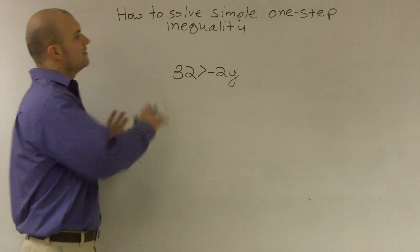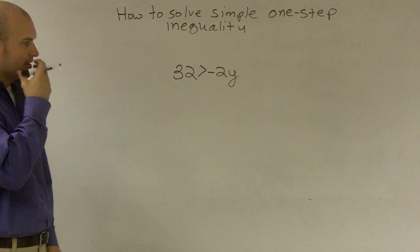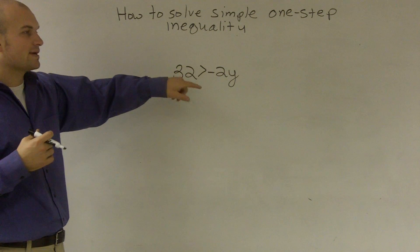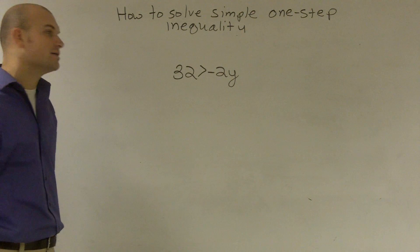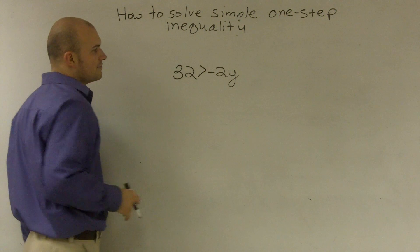All right, what I'd like to do is show you how to solve a simple one-step inequality. Now what we're given is we have a variable on the right side, and we have to use a negative property.